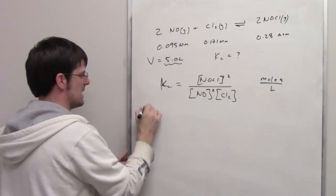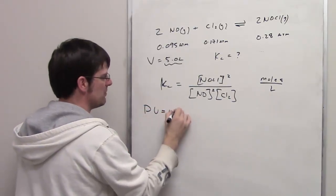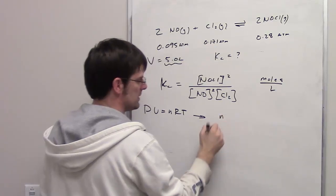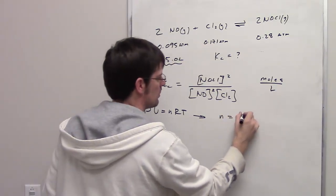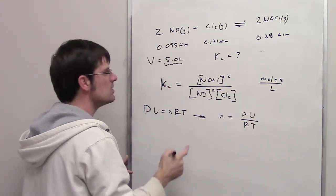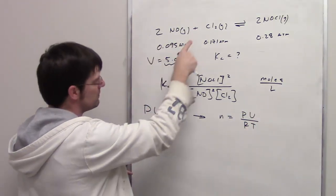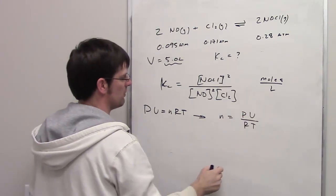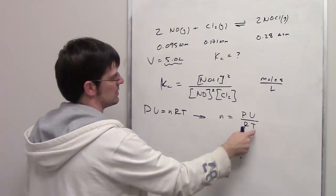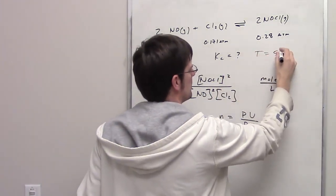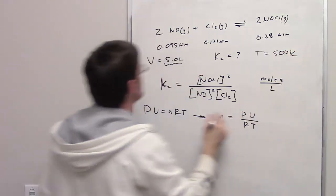Yeah, we're going to use the ideal gas law. Remember, the ideal gas law says PV equals nRT. If you rearrange that, you're going to get n on one side, that's the number of moles, equals PV divided by RT. I can do that for each individual one of these gases. I have its individual pressure, the volume is 5 liters, R is the ideal gas constant. I know the temperature is 500 Kelvin, I neglected to write that, my apologies.